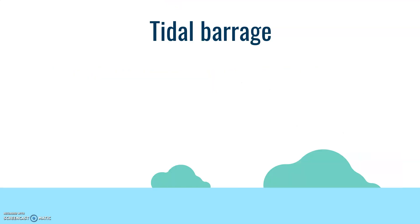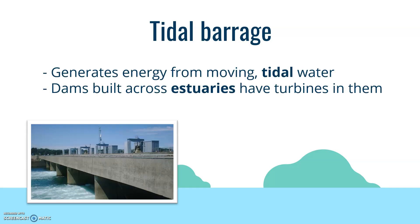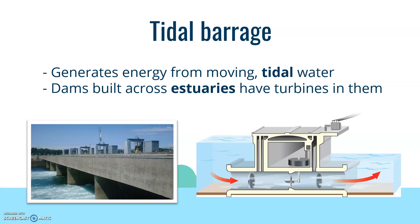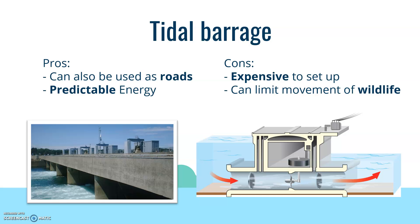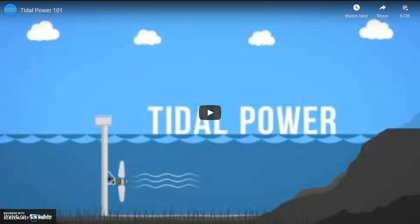A tidal barrage shares similarities with hydroelectric in that it generates energy from moving water, but this time it uses tidal water. A smaller dam is built across an estuary, and turbines inside spin generators to produce electricity. The positives: they can double as roads and be built into infrastructure, and they provide predictable energy. However, they can be expensive to set up and can limit wildlife movement.